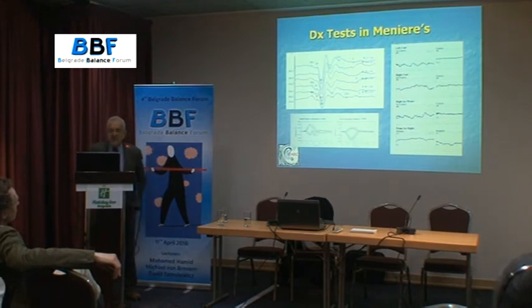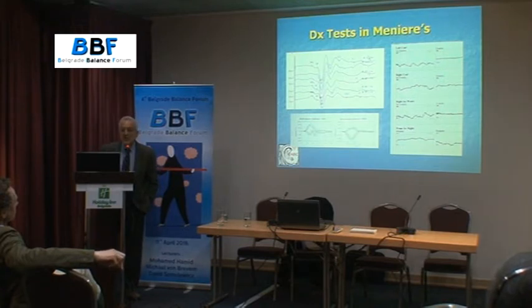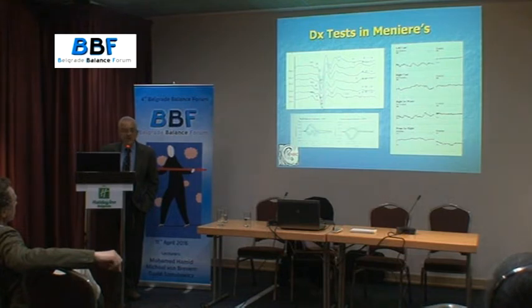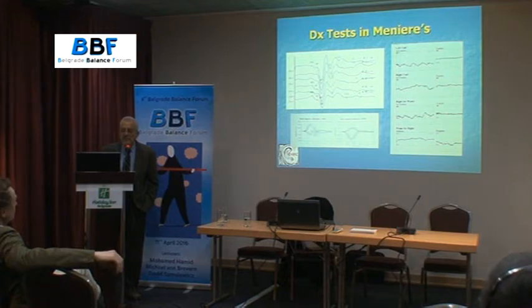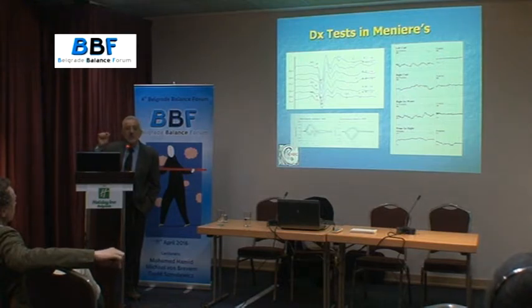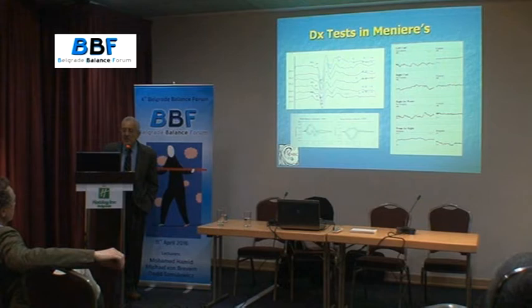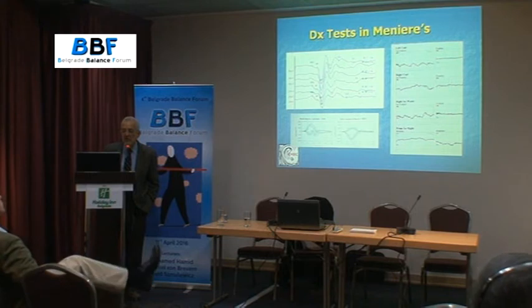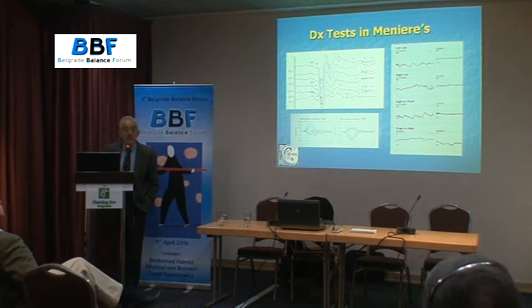We do electrocochleography at our center at different stimulation rates — 7.1 all the way to 97.1 — and you can actually get the ECOG signal. We get the summating potential, action potential, and when we do the ECOG, we get the ABR signal right away, so you don't need to do two tests. Here is a recording using a tympanic membrane electrode — you have the action potential which is wave one, two, three, and so on. We also do ENG testing, especially the caloric test, to look at the caloric response.